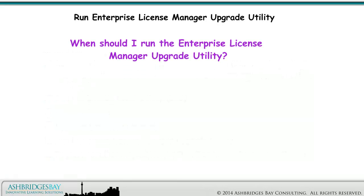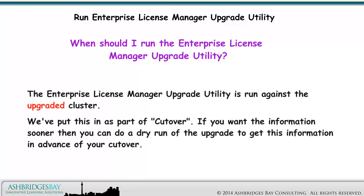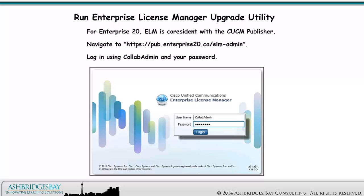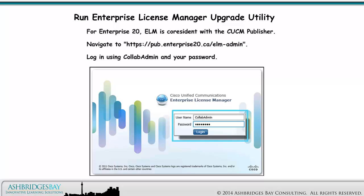When should I run the Enterprise License Manager upgrade utility? The Enterprise License Manager upgrade utility is run against the upgraded cluster. We've put this in as part of Cutover. If you want the information sooner, you can do a dry run of the upgrade to get this information in advance of your Cutover. For Enterprise 20, ELM is co-resident with the CUCM Publisher. Navigate to https://pub.enterprise20.ca/elm-admin. Log in using Collab Admin and your password.